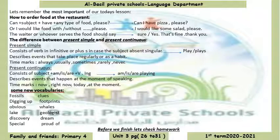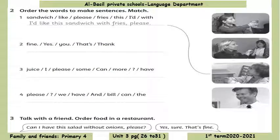Now, before we finish, let's check our homework. Number two: order the words to make sentences and match. Sandwich, like, please, fries, this, I would, with. The answer is: I'd like this sandwich with fries, please. After you make your sentence, match it with the proper picture.